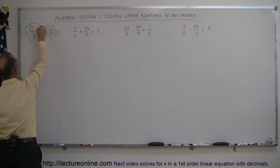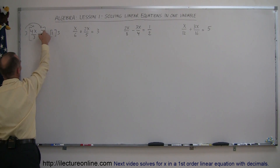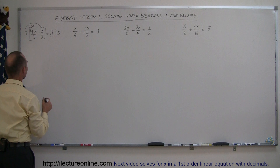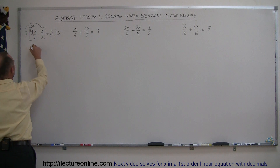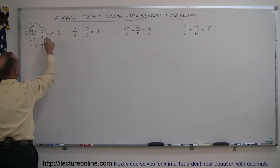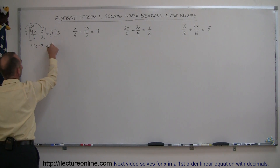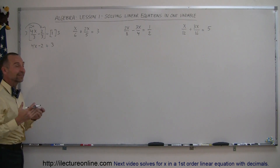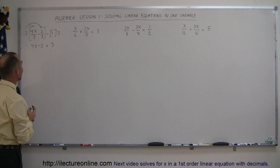If you then do the same for the second term, the 3s will cancel out and you simply end up with a negative 2. When you multiply both sides of the equation by the same number, nothing really changes in the equation — you just simplify it. So you get 4x minus 2 equals 1 times 3, which is 3. At this point, you solve it exactly the same way as before.